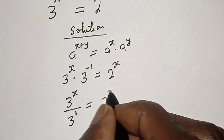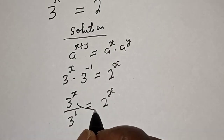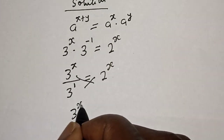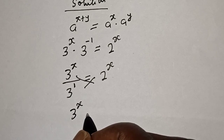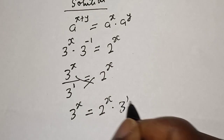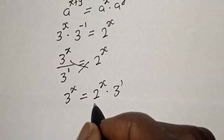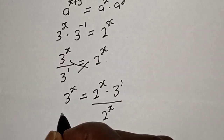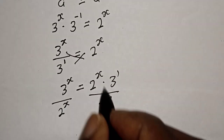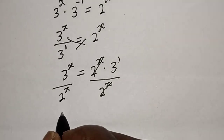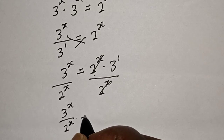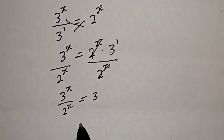This is 3 raised to power s over 3 raised to power 1, is equal to 2 raised to power s. Now we can cross multiply, and we have 3 raised to power s is equal to 2 raised to power s multiplied by 3. Let's divide both sides by 2 raised to power s, so we have 3 raised to power s over 2 raised to power s is equal to 3.